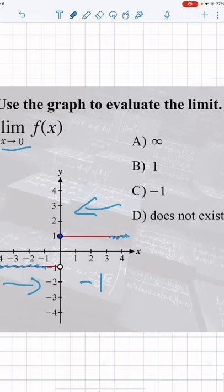As we're approaching 0 from the right, you can see that we're getting closer and closer to the y value of y equals 1.